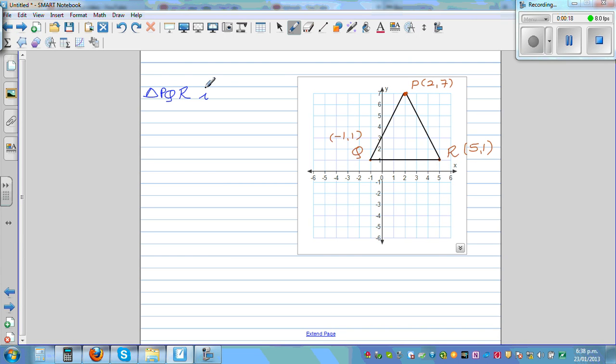What is an isosceles triangle? An isosceles triangle has two sides that are equal. Any two sides, if they are equal, then it's an isosceles triangle. Two sides are equal.